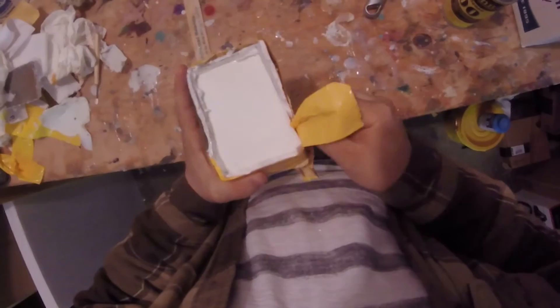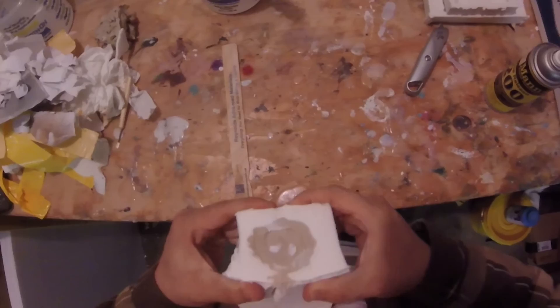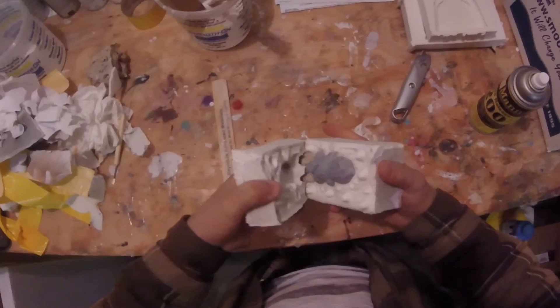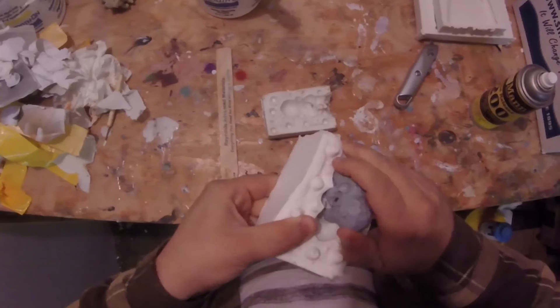Then a few hours later, it's time to de-mold. Silicone pulls apart pretty nicely because of all the release we used. And like that, we have a pretty nice two-part mold ready to cast.